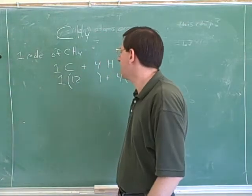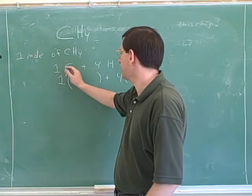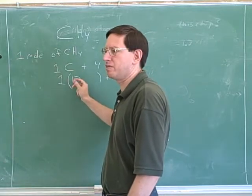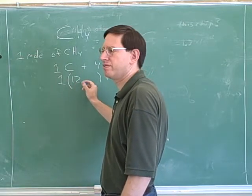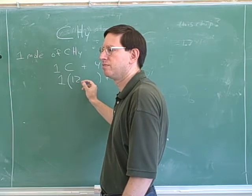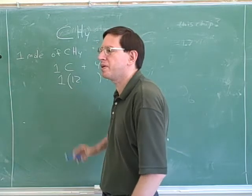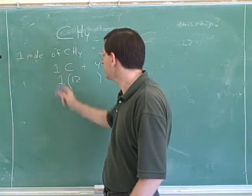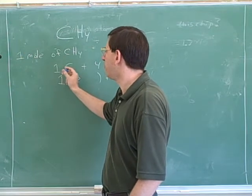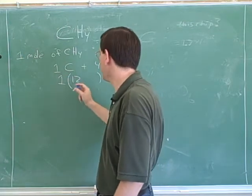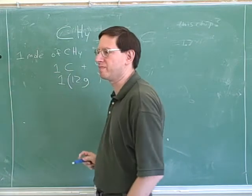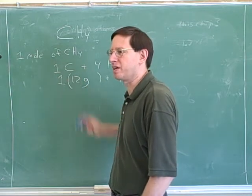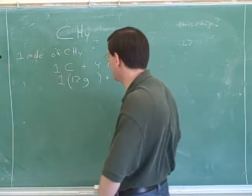Each molecule of methane has one carbon and four hydrogens. From the periodic table, we get a mass of 12 for the carbon. The units on that 12 are grams — the periodic table tells you grams per mole. So one mole of carbon has a mass of 12 grams. If we were looking at just one molecule, this would be 12 AMUs, but we usually focus on grams and moles.